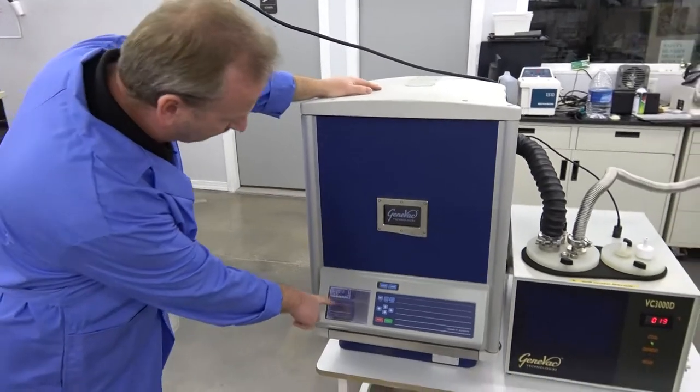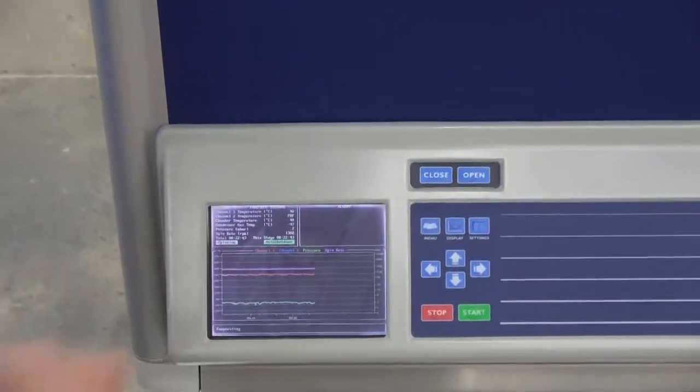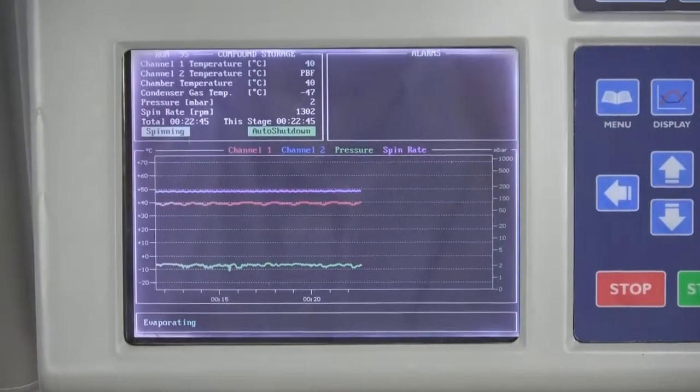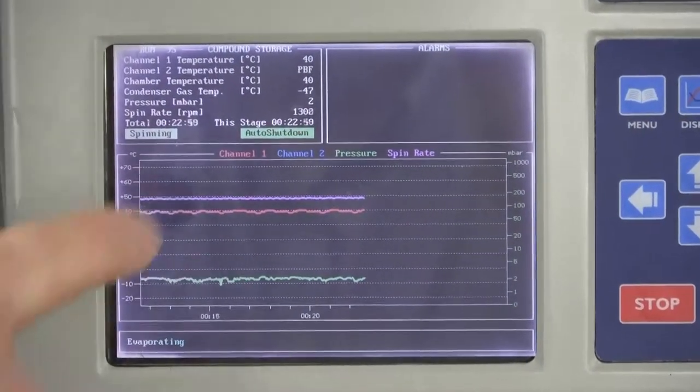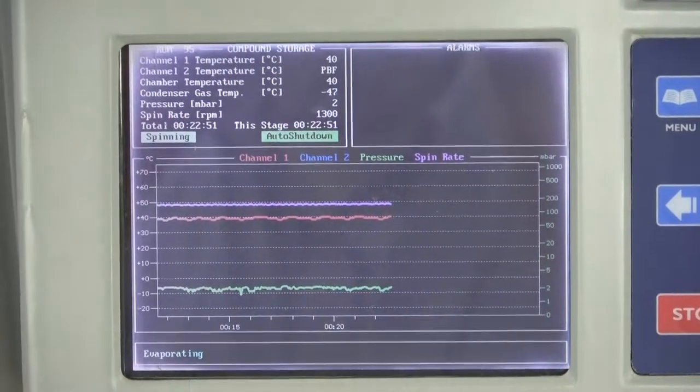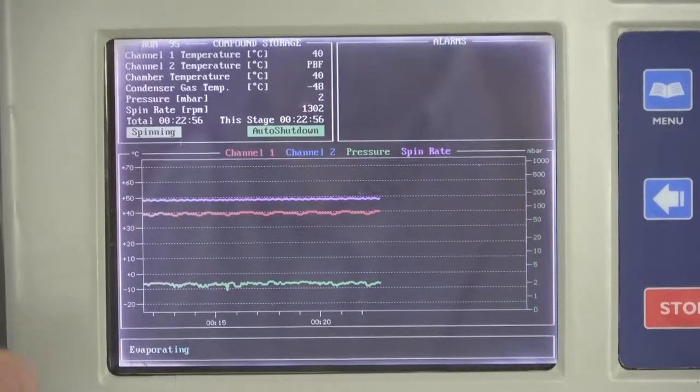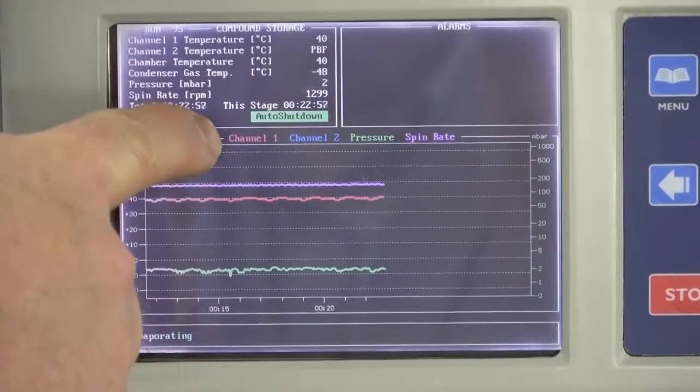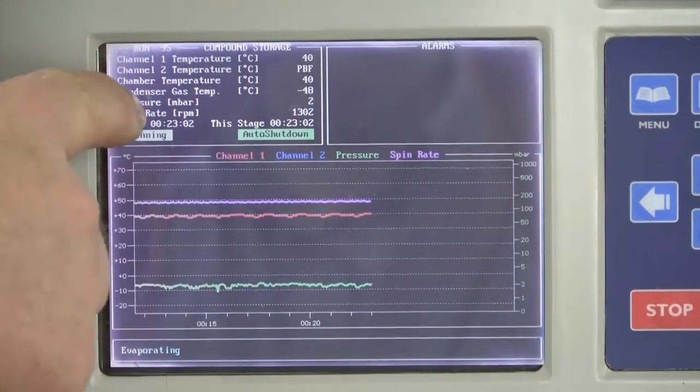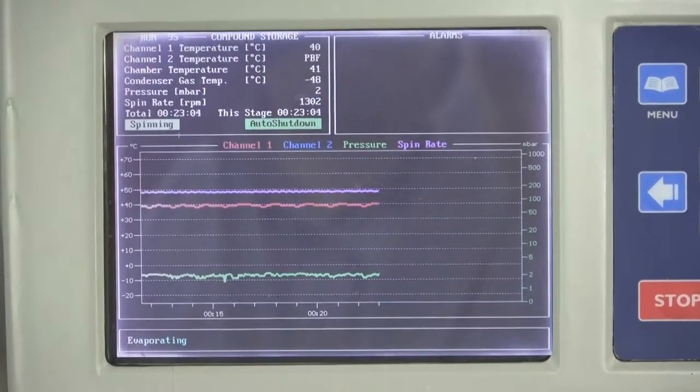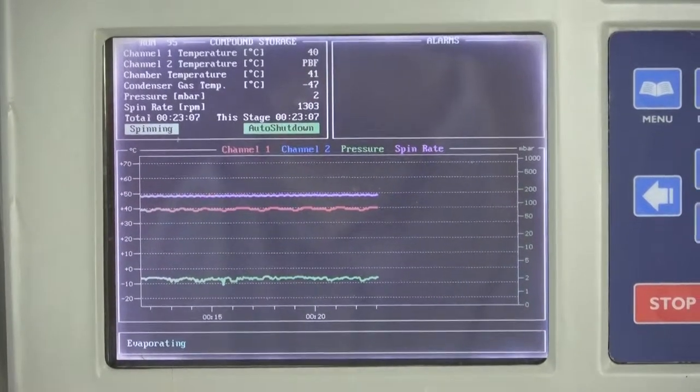Right now we are doing a run. You can see on the screen we got the lines moving across here. We do have the channel one temperature probe running. It's running at 40 degrees, so all the lights are working and running correct there, and it is down to 2 on the pressure. The temperatures are all great, the vacuum is running great.